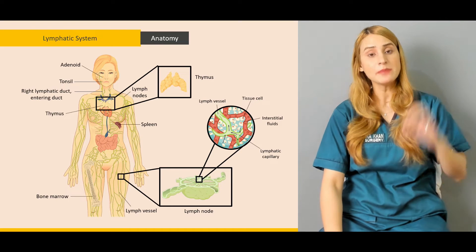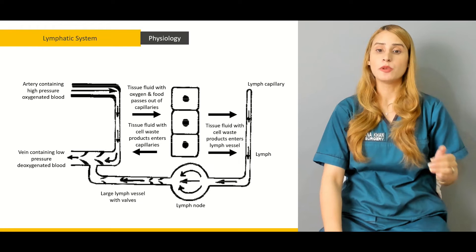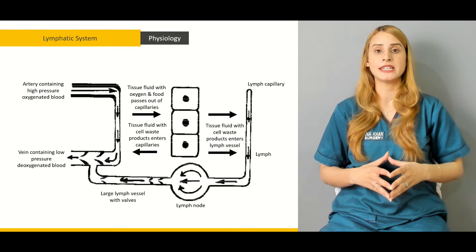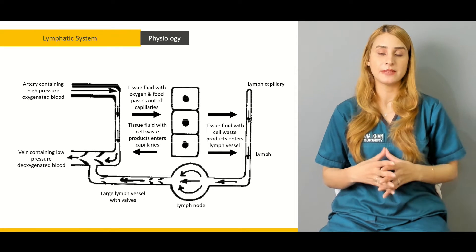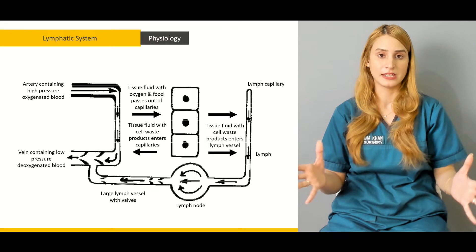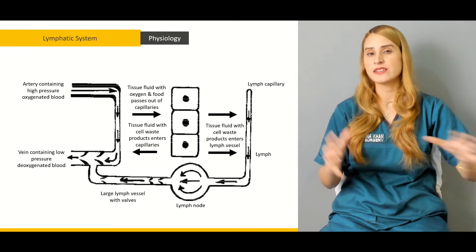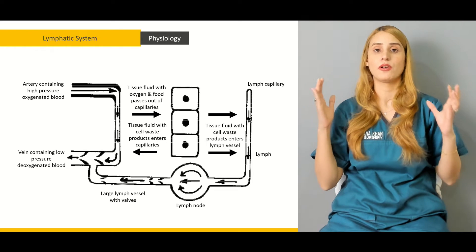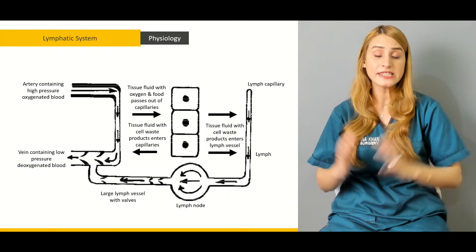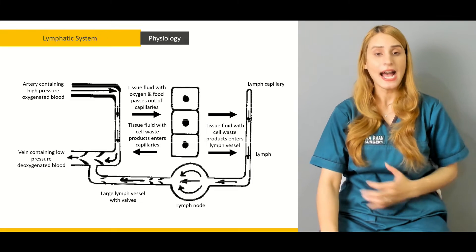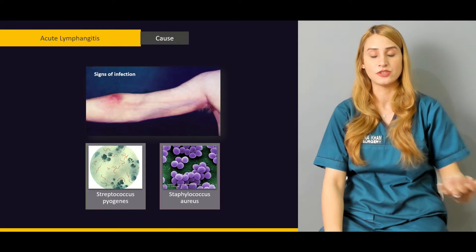Ultimately, they become a part of the venous system. We'll be talking about the physiology behind the drainage of the lymphatic system and obviously how the lymph is being produced, what is the role of the arteries, what is the role of the venous system, and ultimately what important role has to be played by the lymphatic channels in case of the drainage.